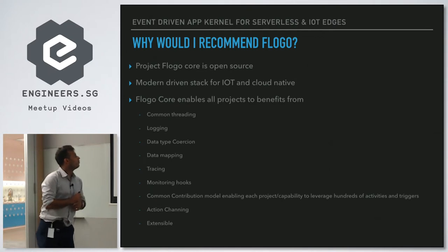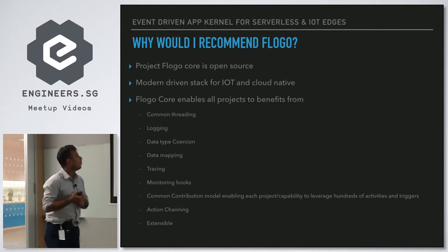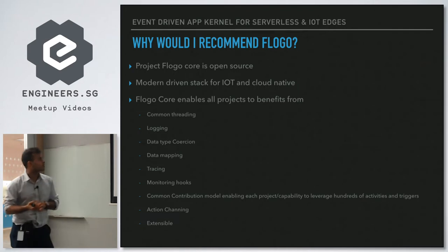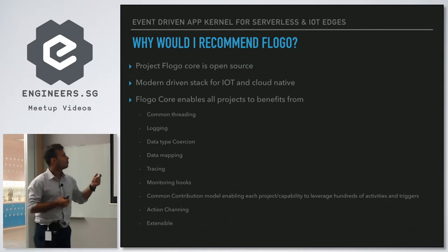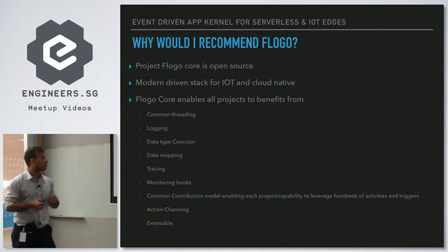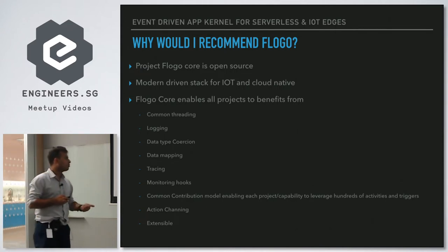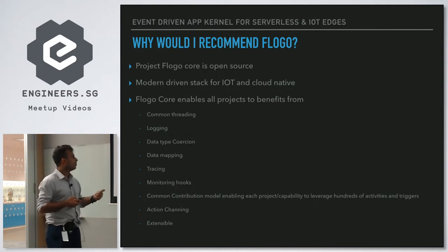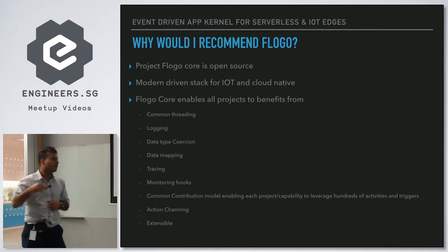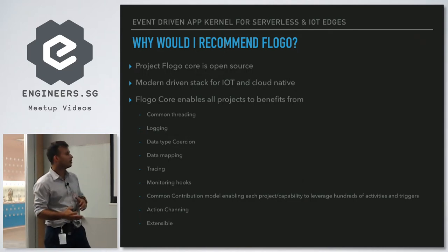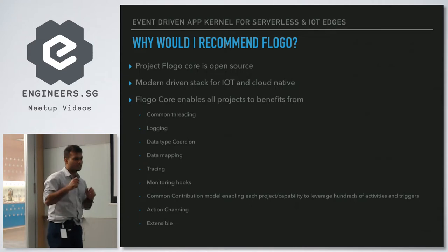I recommend FlowGo because it's open source, modern, and designed for IoT and cloud-native use cases. FlowGo core enables all projects to benefit from common threading, logging, data type coercion, data mapping, monitoring hooks, and a common contribution model — enabling each project to leverage hundreds of activities contributed by other developers. There's also action chaining support.